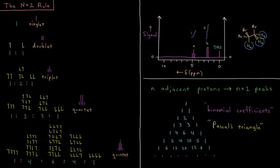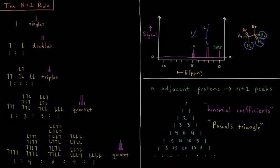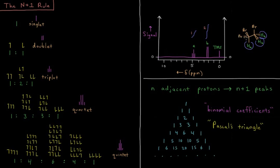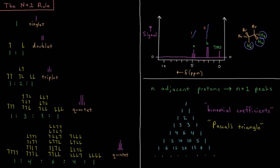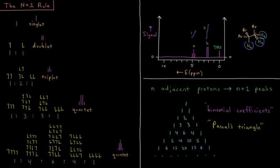This video will discuss the N+1 rule for coupling in NMR. Let's say we're looking at a spectrum here. We have this molecule here, which I suppose would be 1,1,2-tribromoethane.